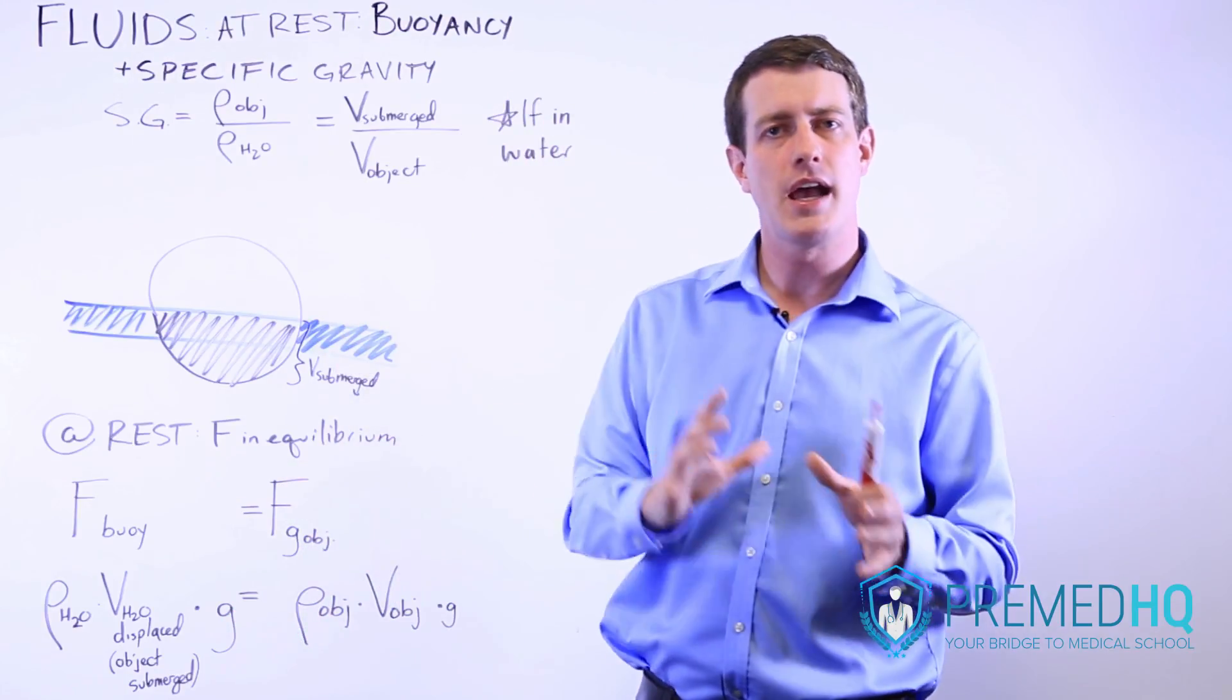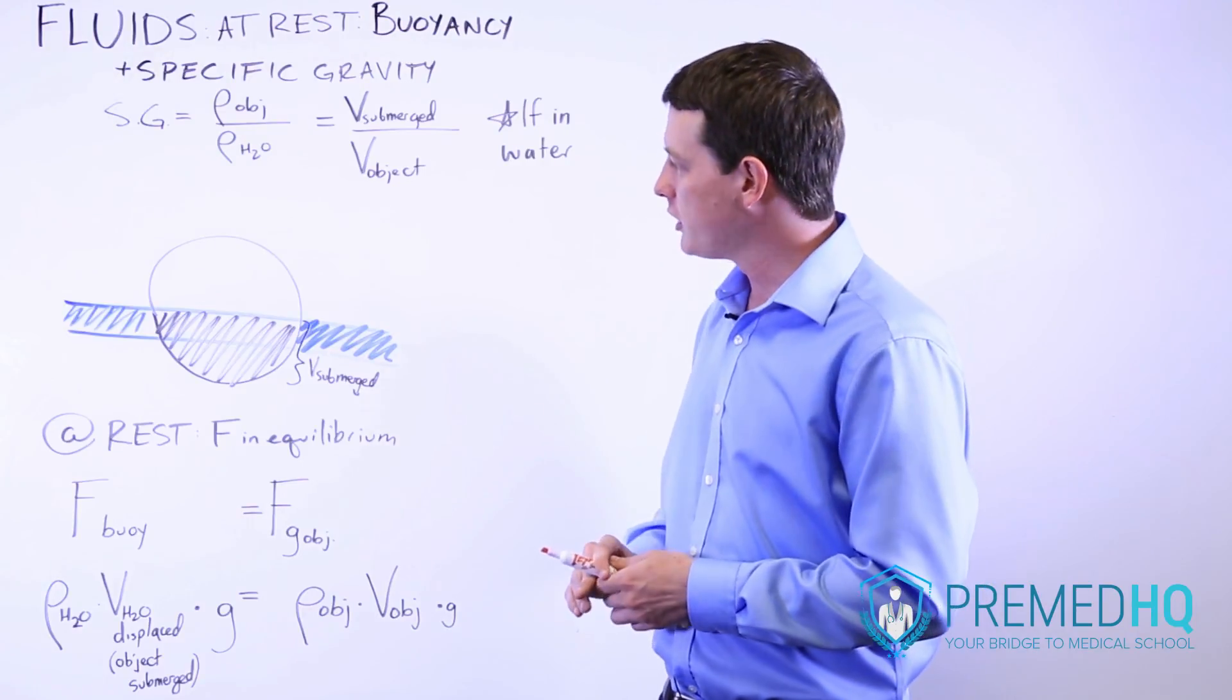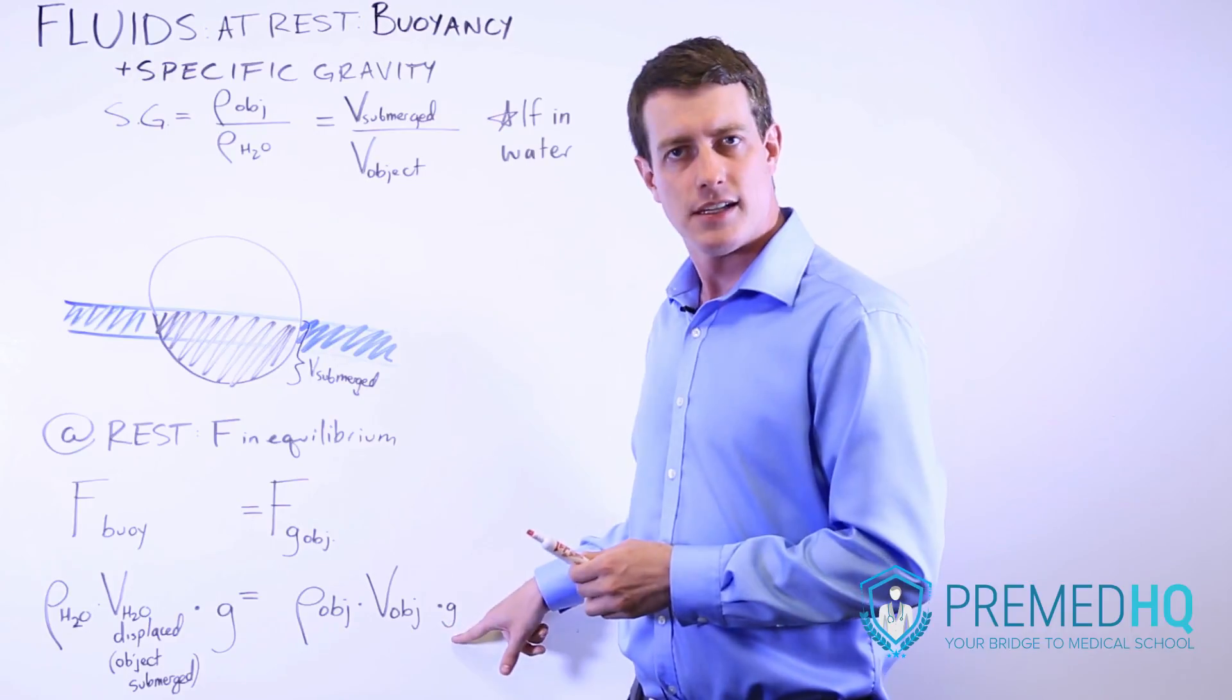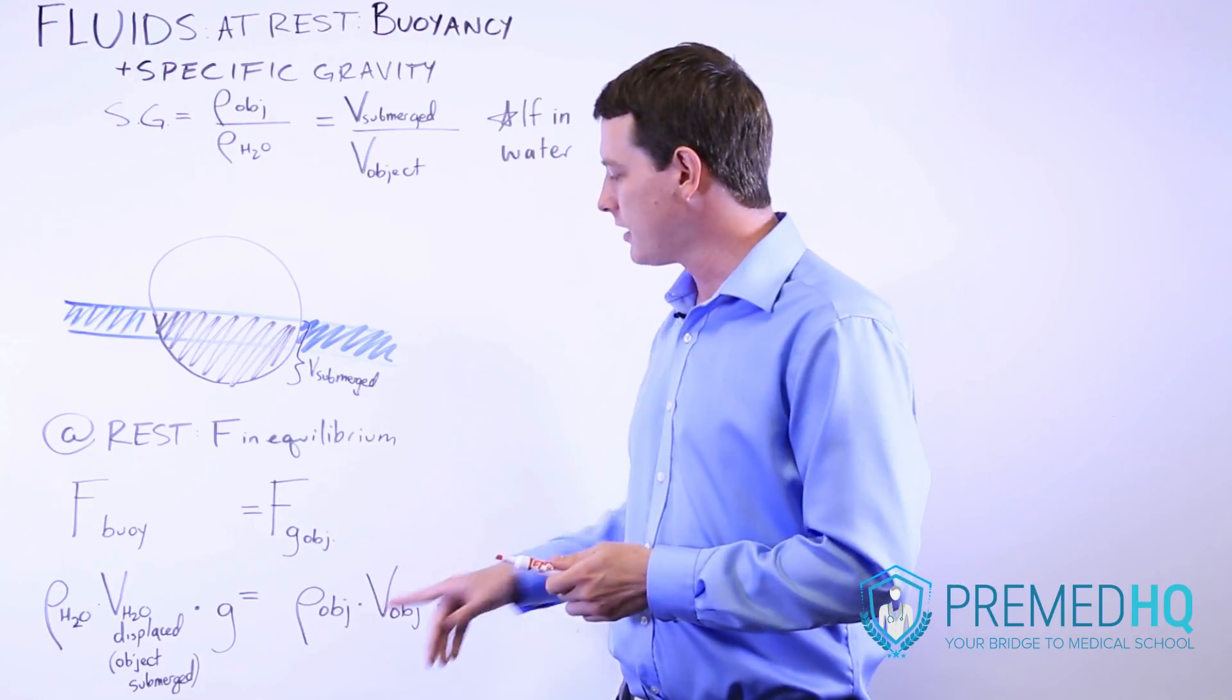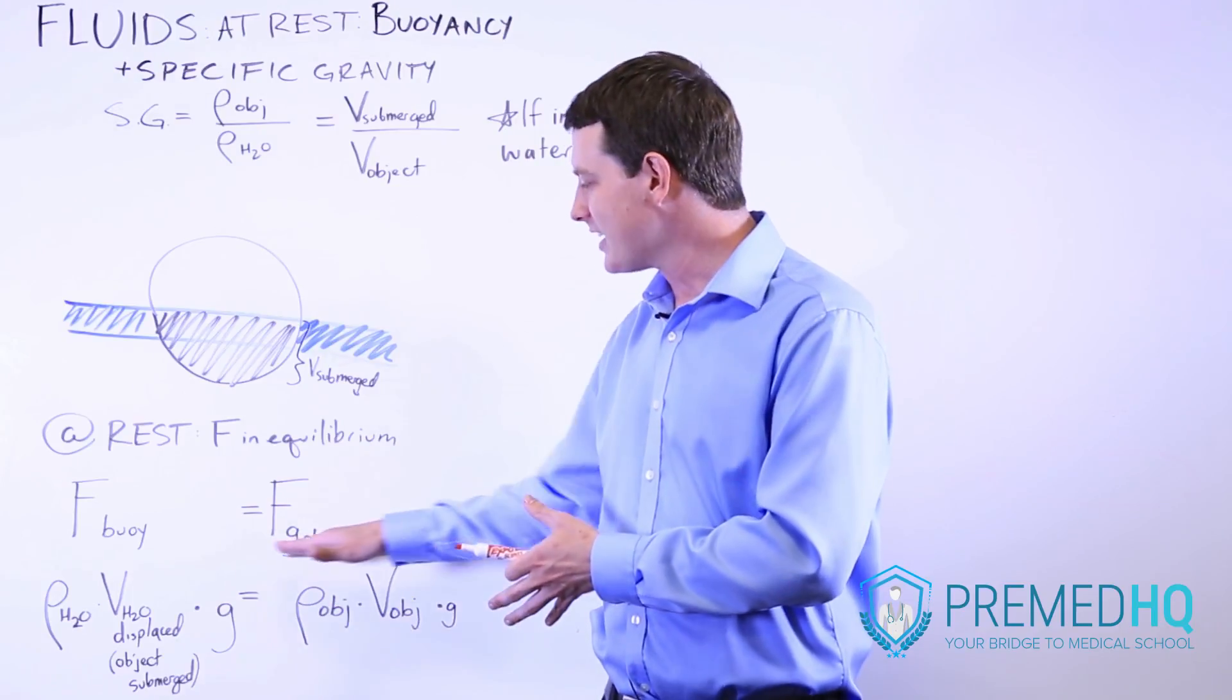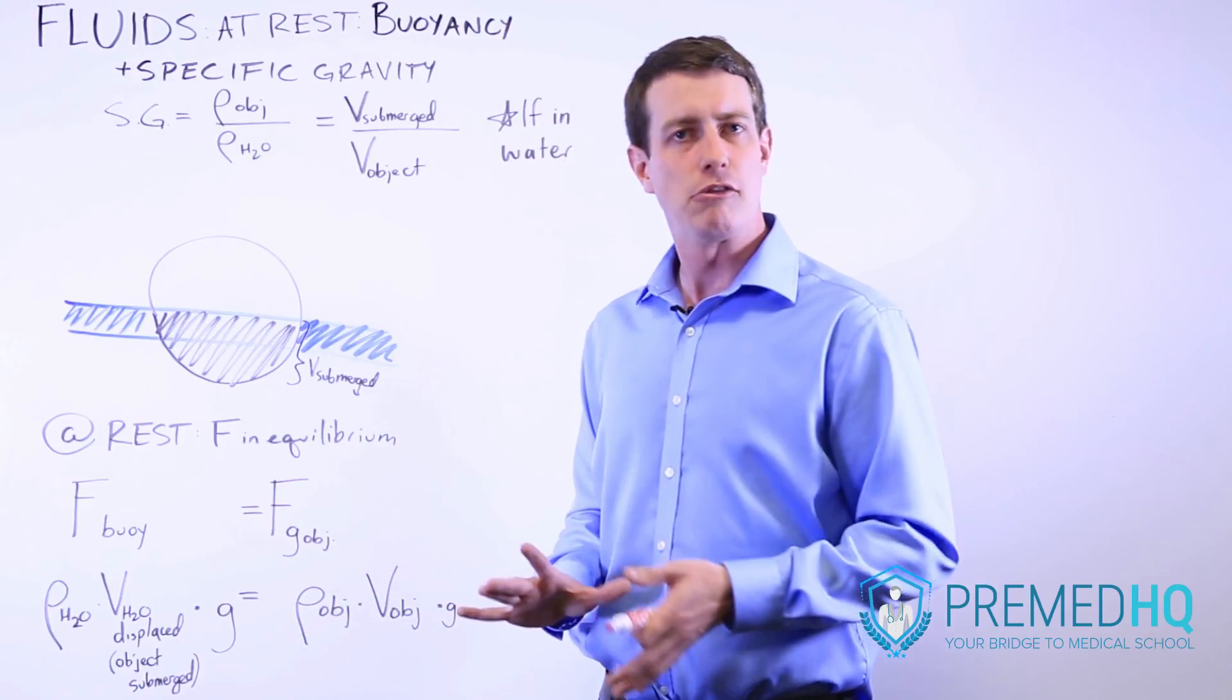And instead of having force of gravity be mg, instead we're using the density of the object times the volume of the object times g. This works because remember that the density of the object is its mass divided by its volume. So this is the mg formula written in a different way.